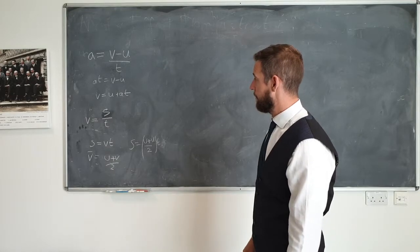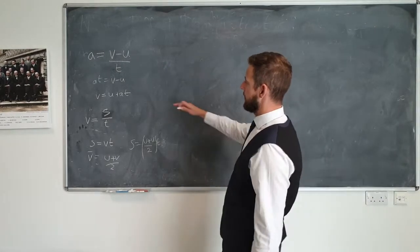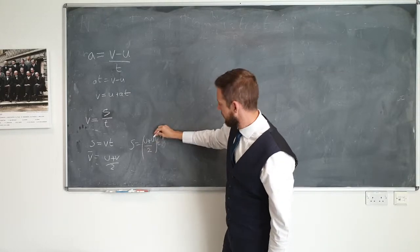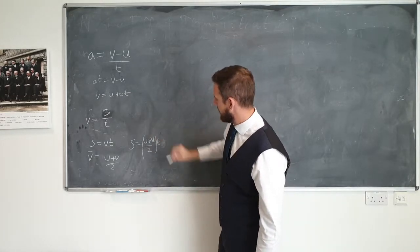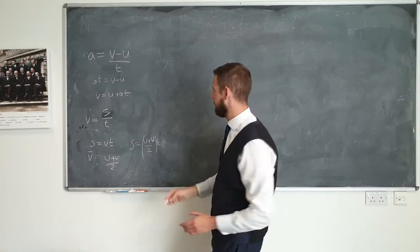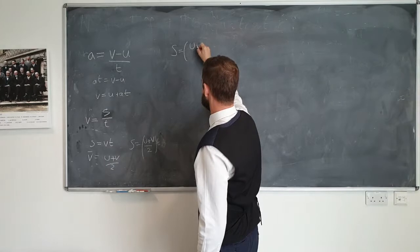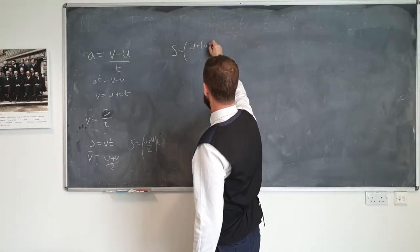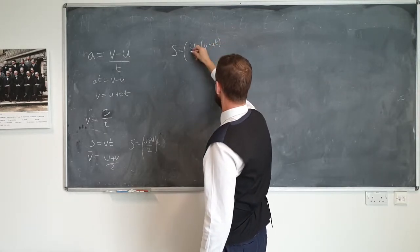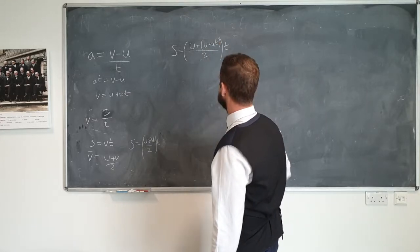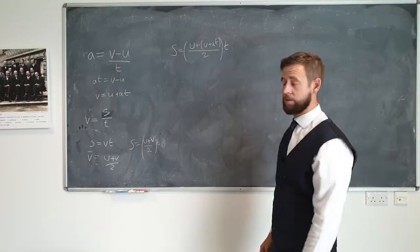We want to go for another one. What we could do is take this expression for V and substitute it into the V of this equation here. So if we have S equals U plus U plus AT divided by 2 times T, then we have this relationship here.